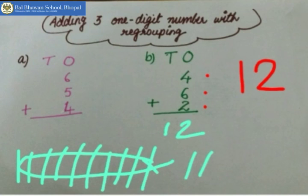So 2 will come under 1's place, and 10s will go at the 10's place. So 1 ten will go under 10's place. Got it?